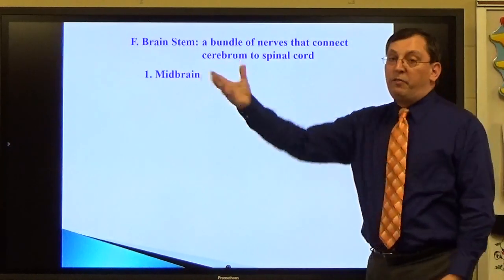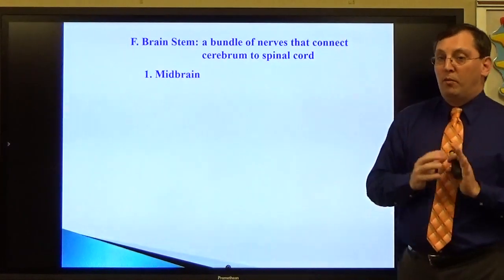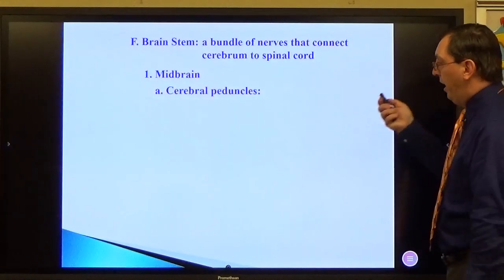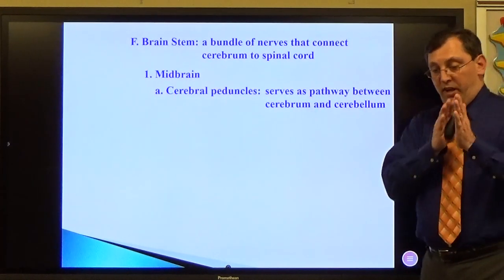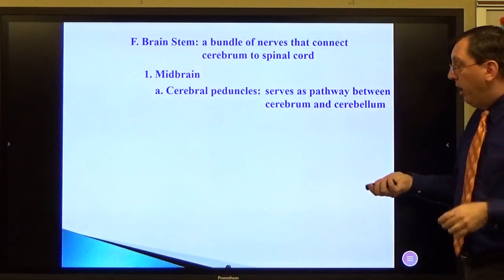So the midbrain is the first section. I know I called another part of the brain the midbrain. Traditionally, this is the midbrain of the human brain. It has the cerebral peduncles. Fun name. It serves as the pathway between the cerebrum and cerebellum. This is a transfer zone. It allows you to take information from one to the other and back and forth so they can communicate.